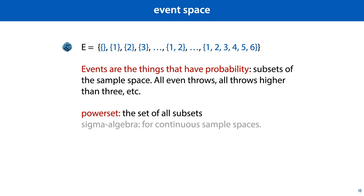Next up is the event space. We construct this from the sample space. Events are those things that can have probabilities. These include the elements of the sample space, like the probability of rolling a six with a die, but they also include sets of multiple elements from the sample space, like the event of rolling a one or a six, and the event of rolling an even number. Even the empty set and the set of all six numbers are events in the case of rolling a die. For our purposes, we can simply say that if the sample space is discrete, then the event space is the power set of the sample space, the set of all possible subsets that we can make. For continuous sample spaces, not every subset can be an event. Here we actually need to make sure that our event space is something called a sigma algebra.